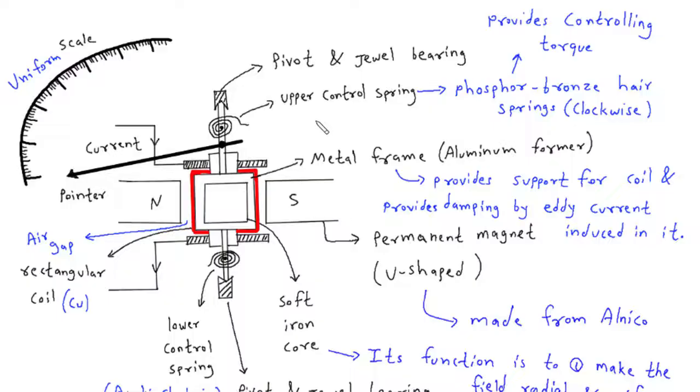We'll explore the significance of the upper and lower control springs, which maintain stability and ensure the pointer returns to zero position when no current is present.